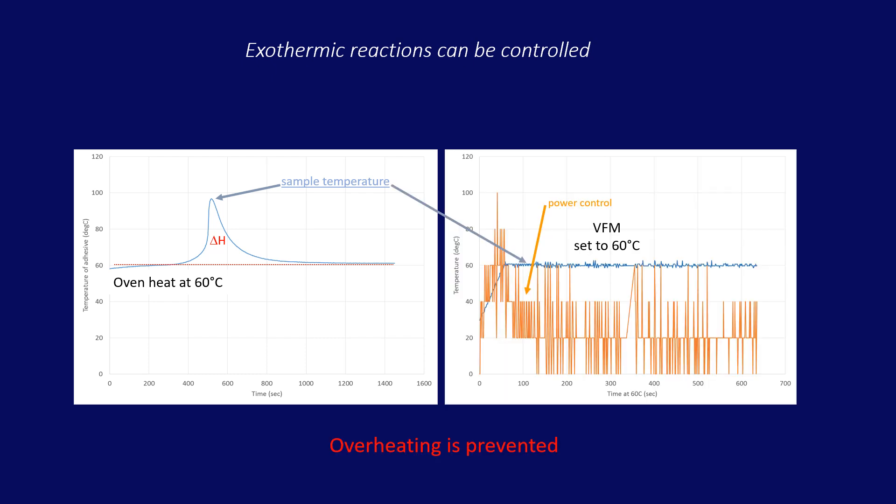On the right, the digital VFM system controls the sample temperature as set within one degree Celsius. These two graphs are actual, from identical samples. Exotherms are often not known about, and not planned for.